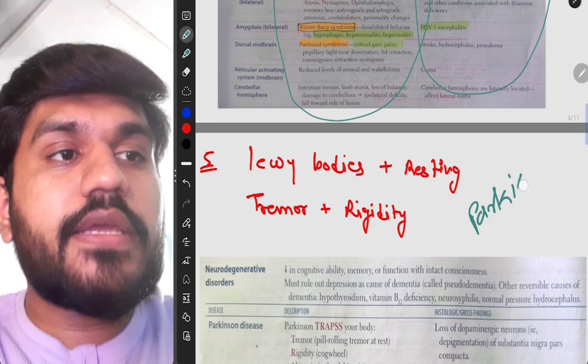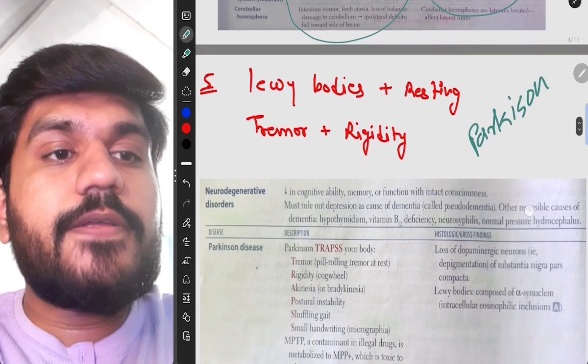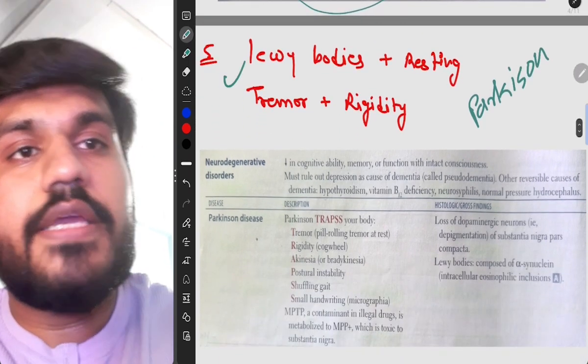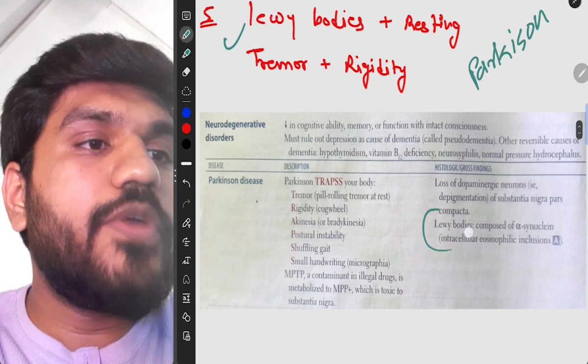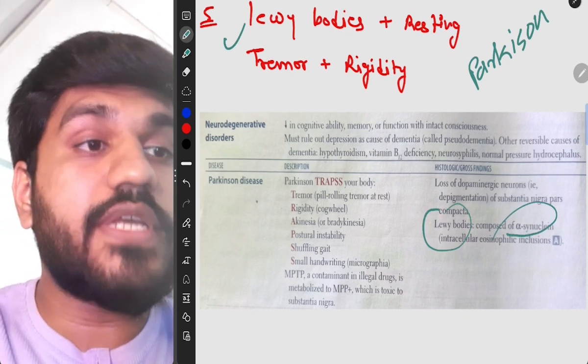Fifth question is Lewy bodies and resting tremor and rigidity. This is again Parkinson disease. So Lewy body is a giveaway. As you can see, Lewy body composed of alpha synuclein and those are intracellular eosinophilic inclusions and this is concisely given here.